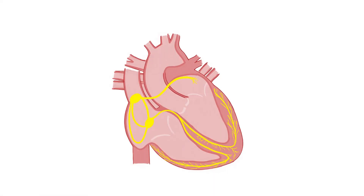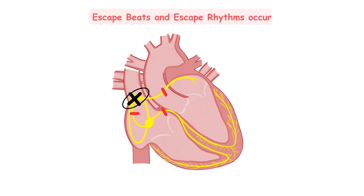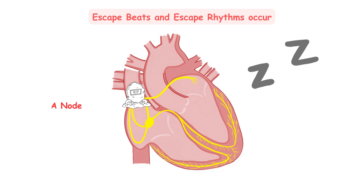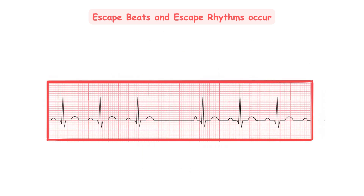When the normal pacemaker stops sending impulses or the conduction of the impulses is blocked, escape beats and escape rhythms occur. When the SA node fails to send an impulse, the heart remains temporarily still. This on the ECG is recorded as a flat line after a regular rhythm. When such a break appears, another potential ectopic pacemaker starts generating impulses to save the situation.